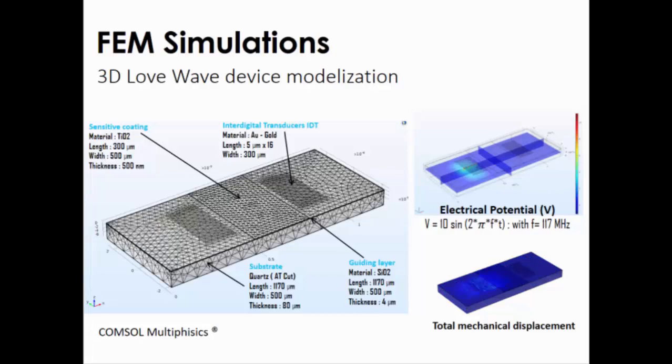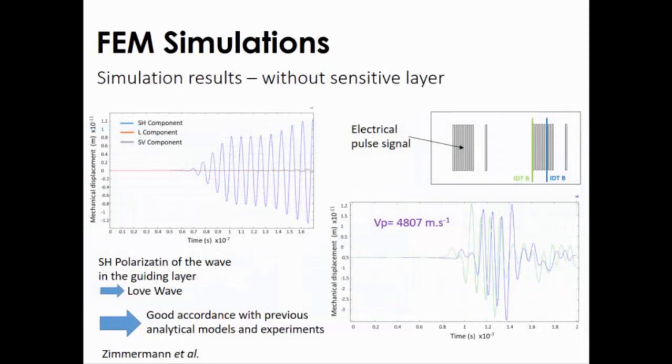First, to validate the results we obtained, we compared this first simulation to previous works. We can see in this graph that we have the shear horizontal component in the guiding layer, which is compatible with a Love wave propagation device. It's possible when we generate here analytical pulse to measure between two IDTs, for example A and B. It's possible to estimate the Love wave phase velocity, close here to 4,800 meters per second, close to previous results we obtained with analytical modelization.